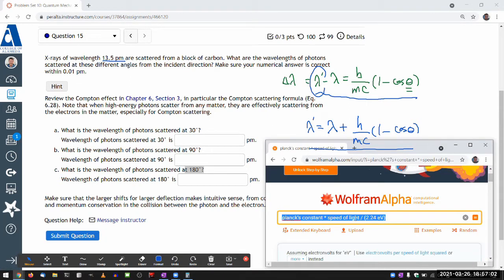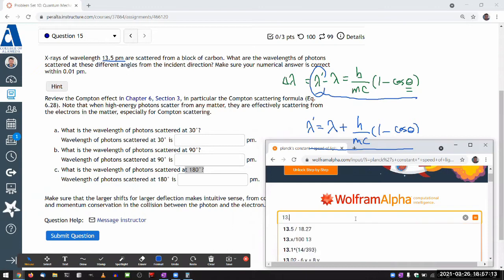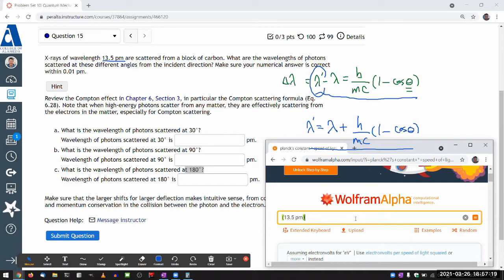Okay, so let's see, I think I'll just type it out. So the instant wavelength is 13.5, and I think if I say PM, Wolfram Alpha will understand that to be picometer, plus Planck's constant, H over.